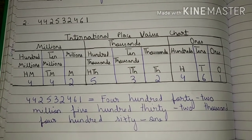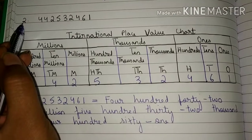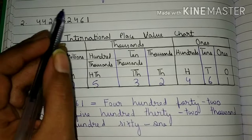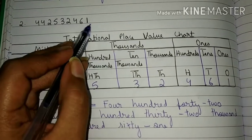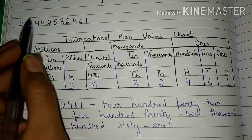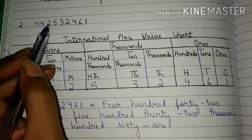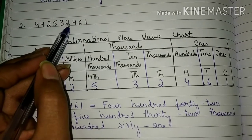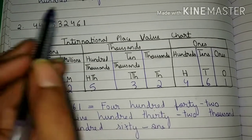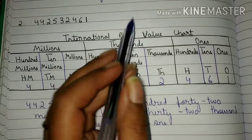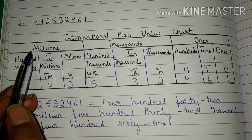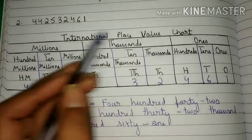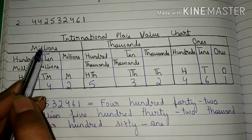Now come to the second number. The number is 442,532,461. You have to write this number in words using the international system of numeration. First of all, you will draw an international place value chart like this. After that, you will mention the periods: ones, thousands, millions.